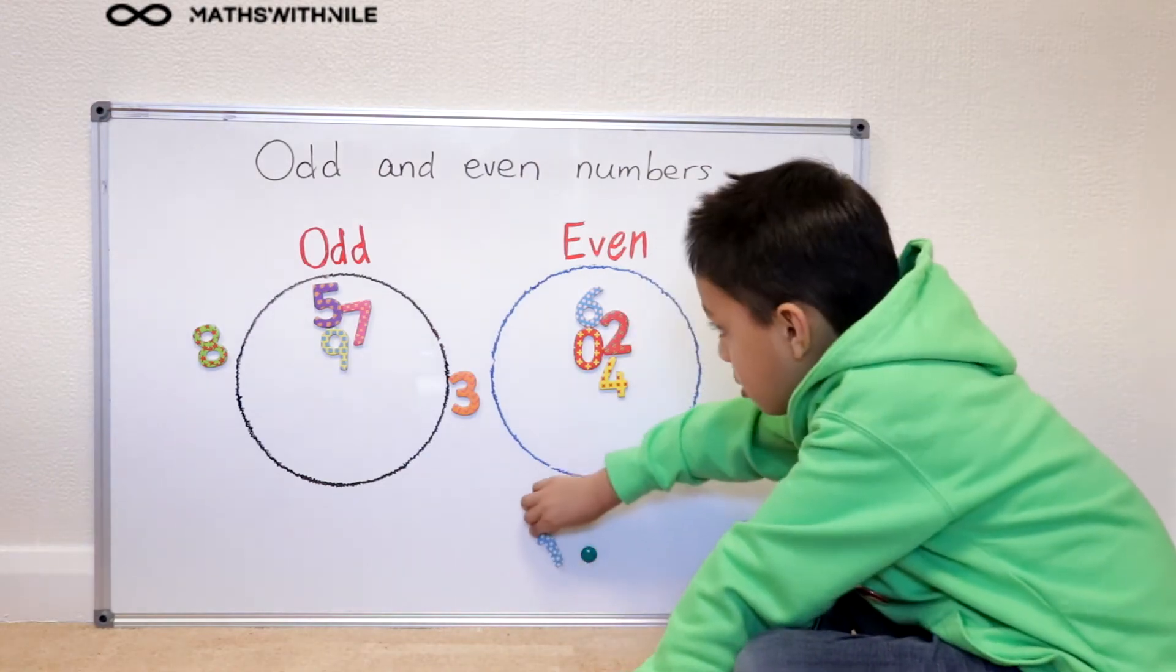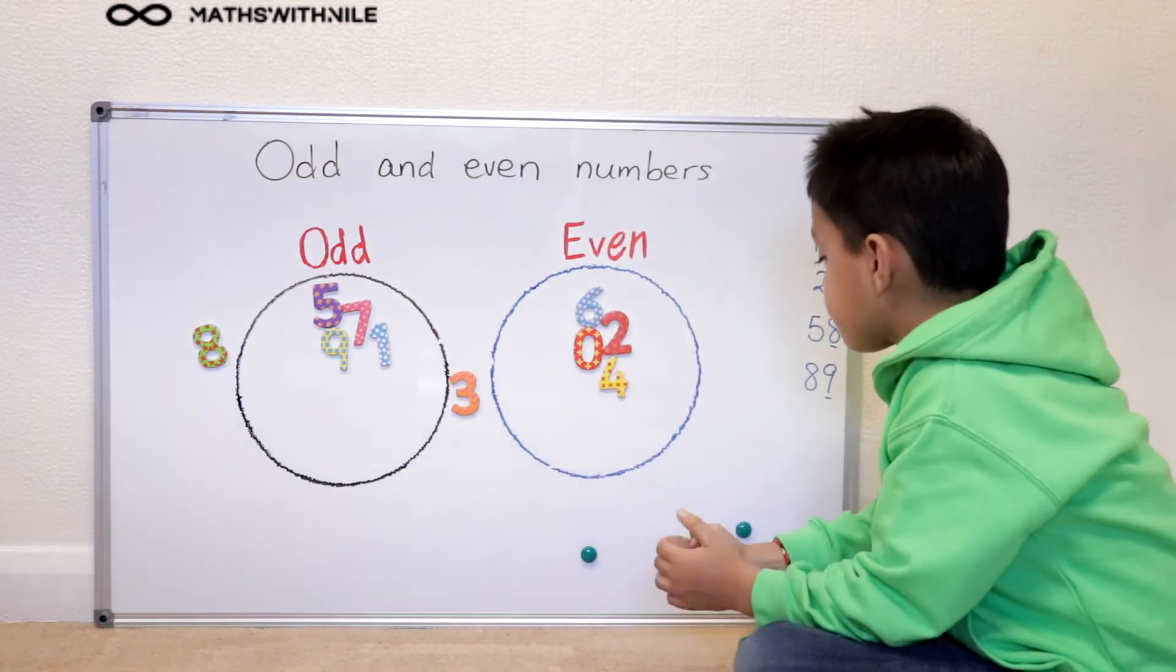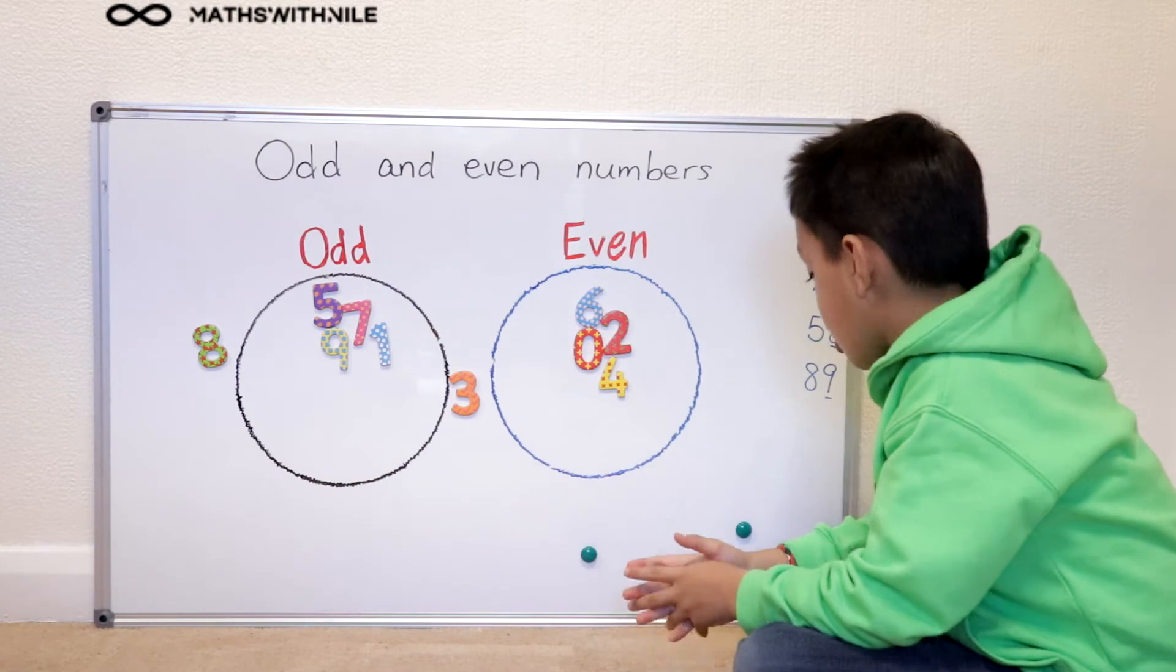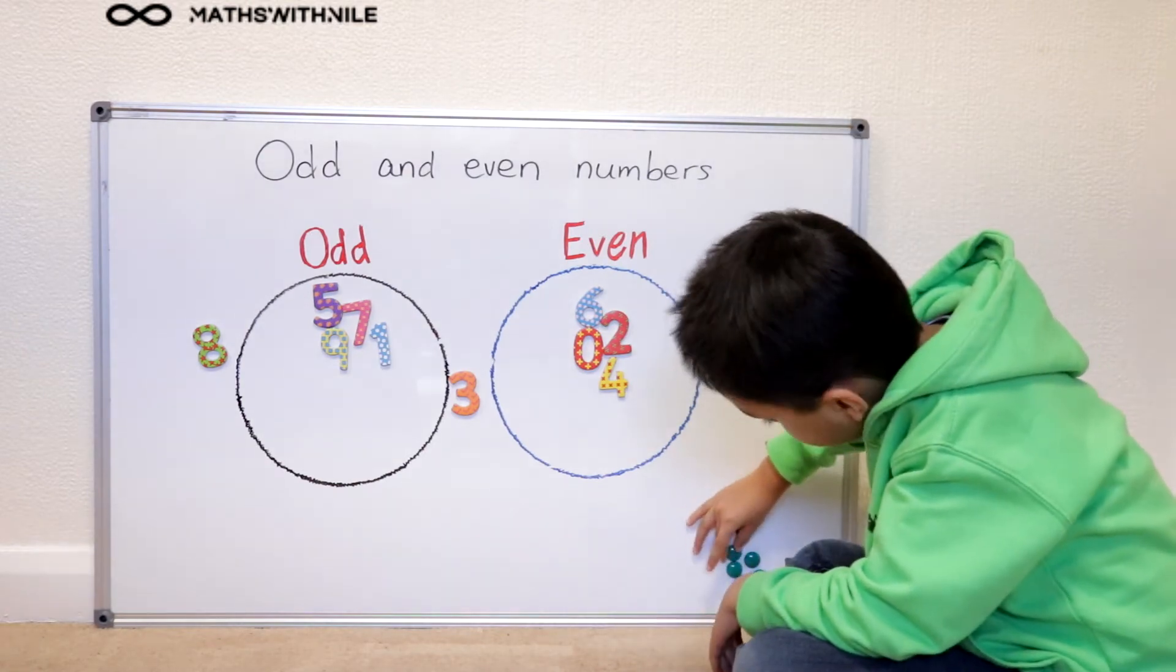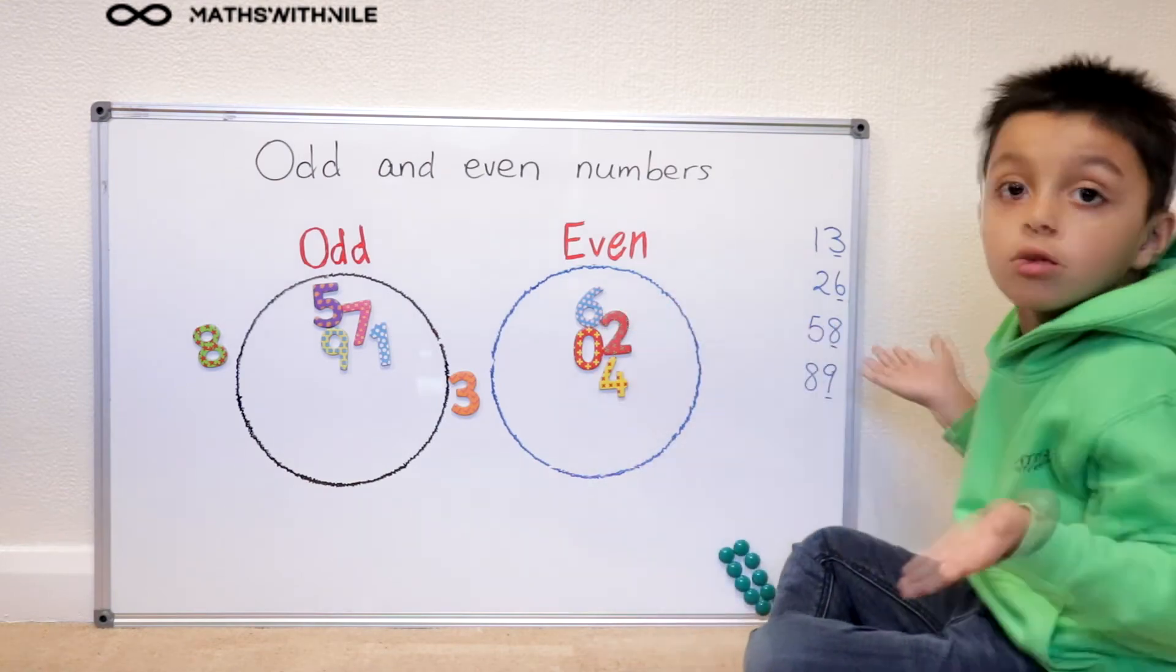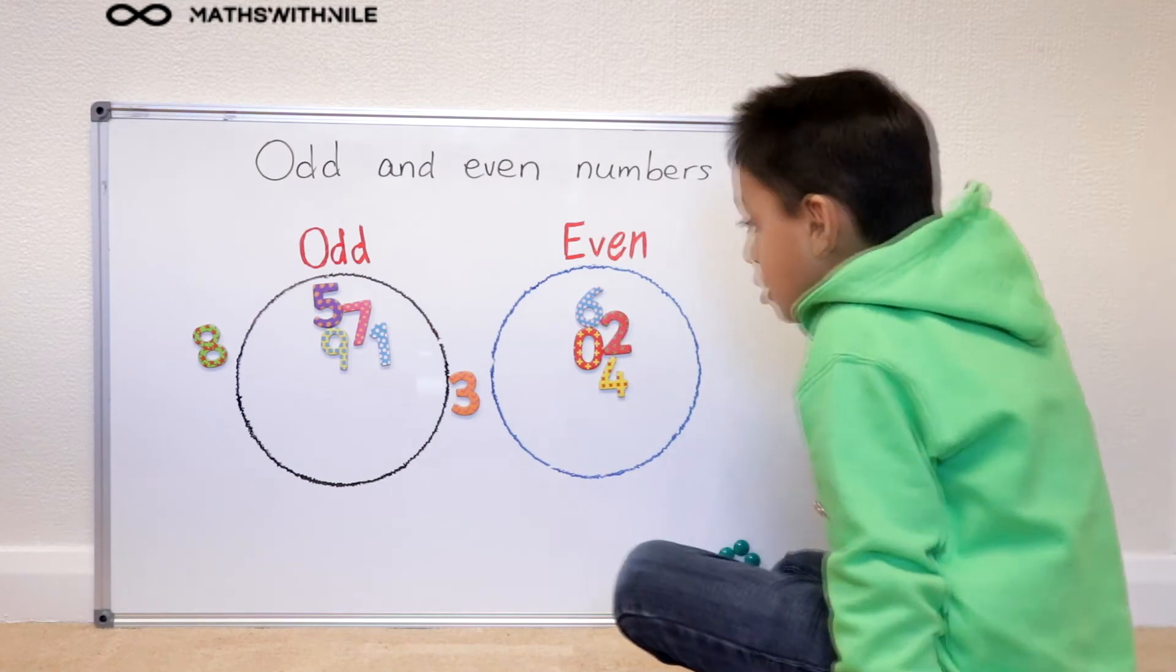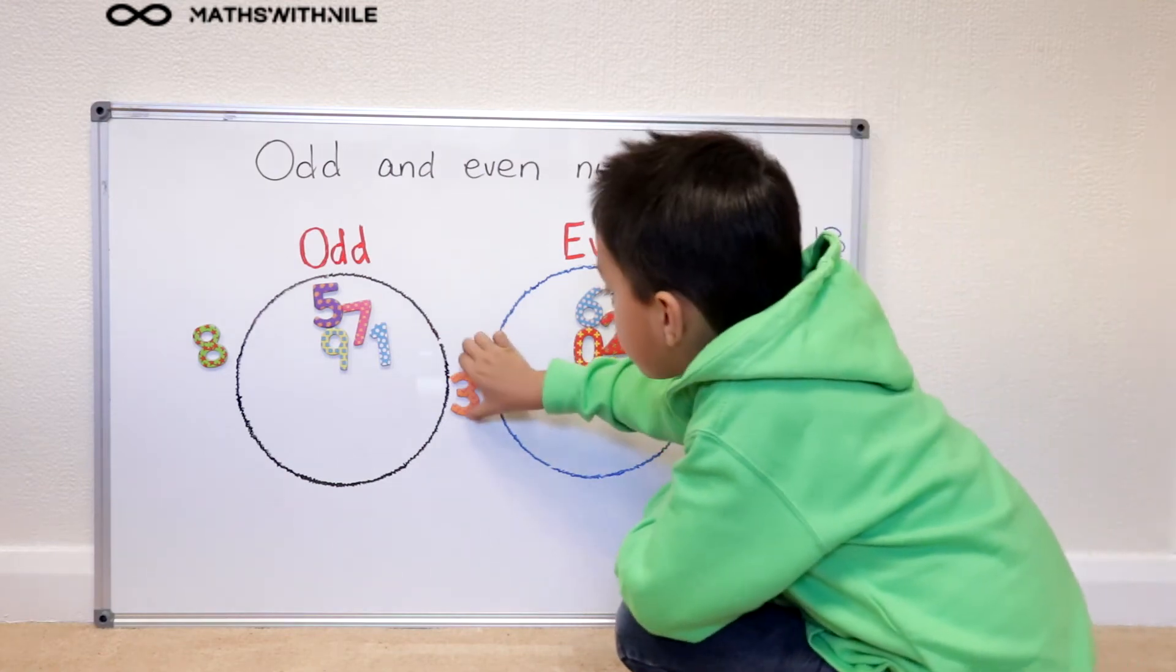So one goes in my odd number group, and then I shall put this back, and then one is an odd number. As simple as that because one is a little number.